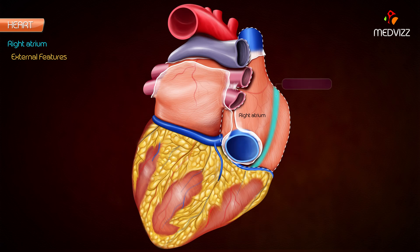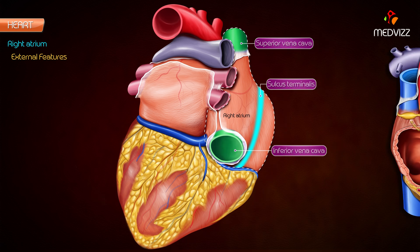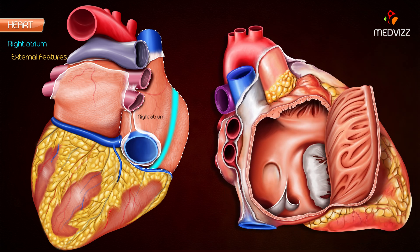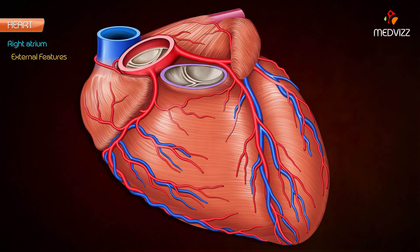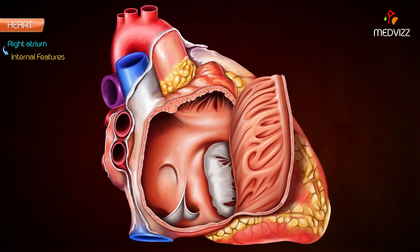A shallow vertical groove called the sulcus terminalis extends along the right border between the superior and inferior vena cava. The upper part of the sulcus contains the sinoatrial node, and internally it corresponds to the crista terminalis. The right atrioventricular groove lodges the right coronary artery and the small cardiac vein.